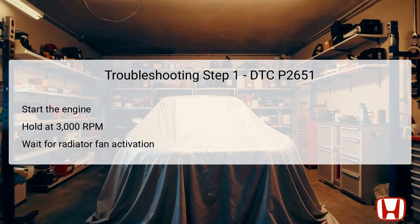The first step in troubleshooting DTC P2651 involves starting the engine and holding the engine speed at 3,000 RPM without any load. This action is critical, as it allows the engine to stabilize and reach optimal operating conditions needed for accurate diagnostic readings. The goal is to run the engine until the radiator fan activates, which typically indicates that the engine is operating at proper temperatures. Monitoring RPM during this step is crucial, as it enables the PCM to perform necessary checks for the rocker arm oil control system. Maintaining the proper RPM ensures that oil circulates adequately within the engine, preparing the hydraulic VTEC system for subsequent diagnostic evaluations.